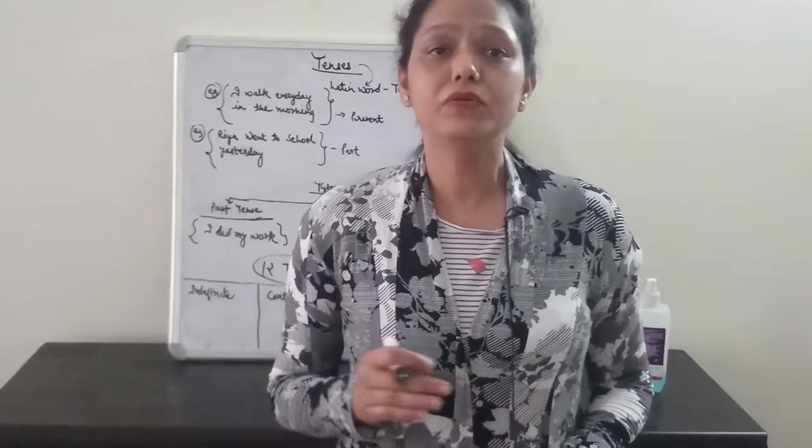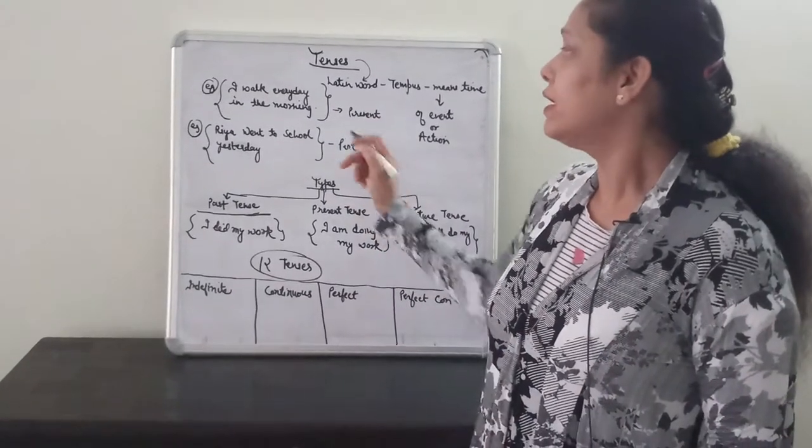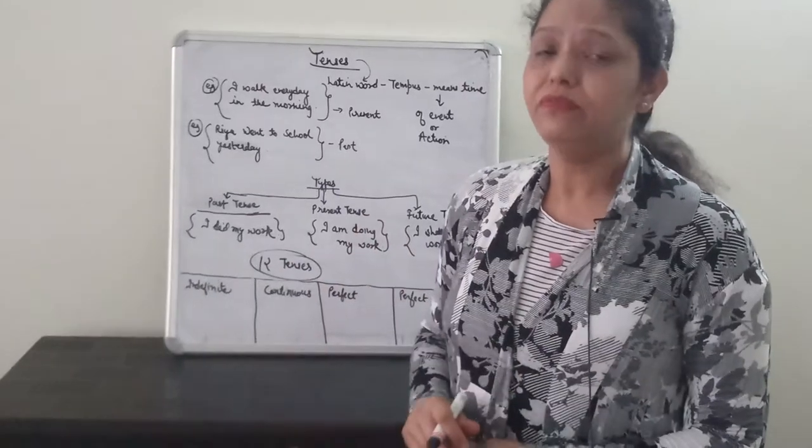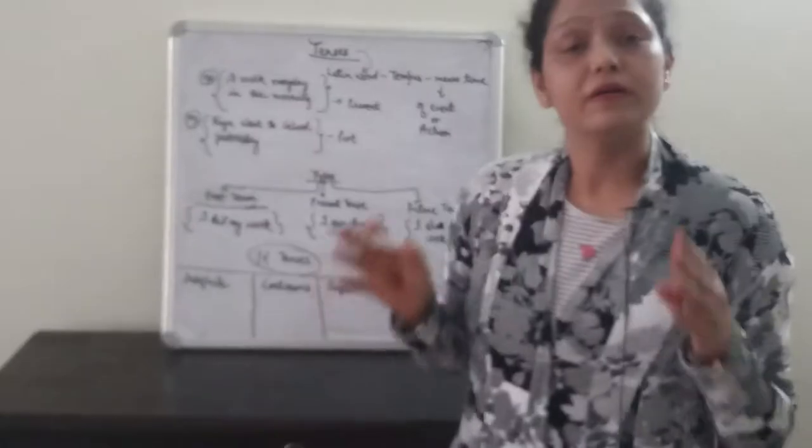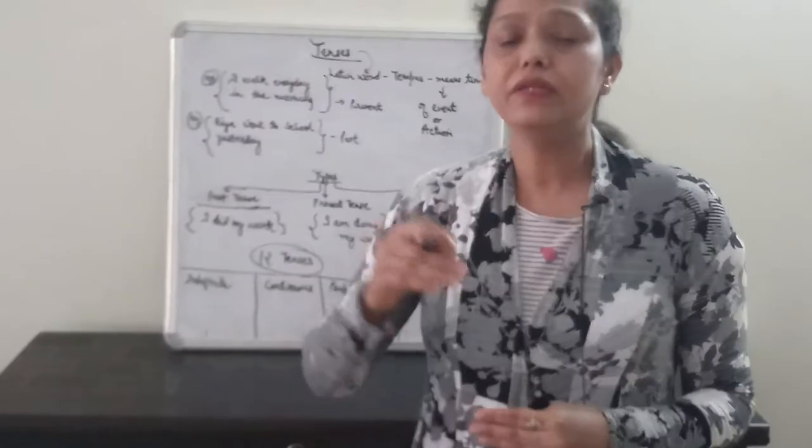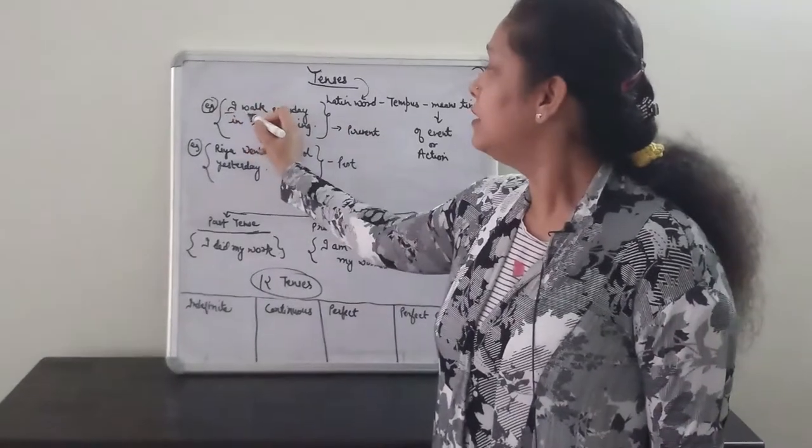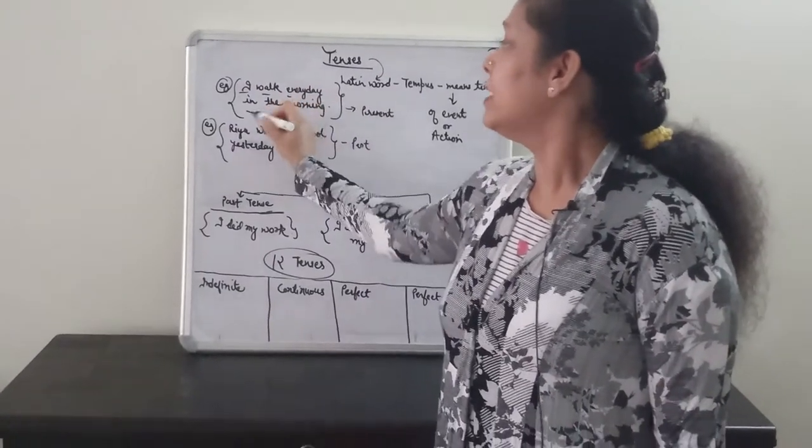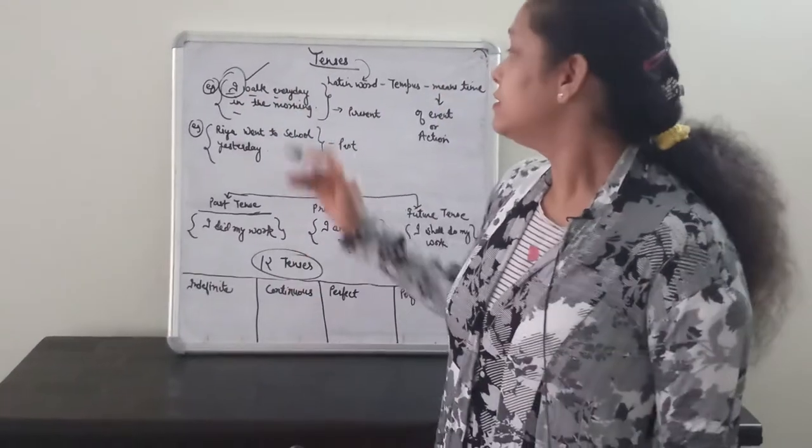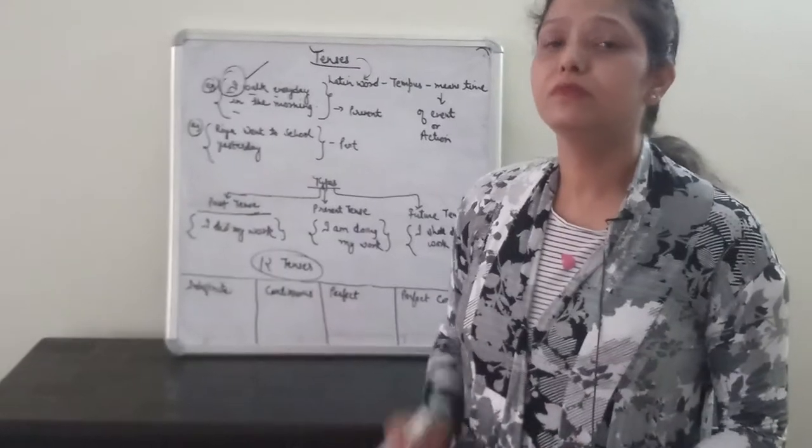Now, when we talk about time, let's take an example. I walk every day in the morning. When we see this example, we find that a sentence is a group of meaningful words arranged in a sequence that gives meaning. If we talk about I, this is the subject or as a part of speech, this is a pronoun.